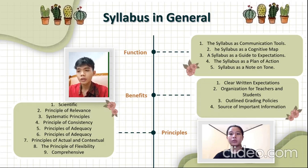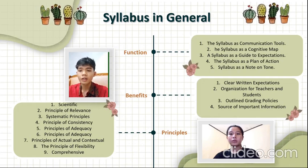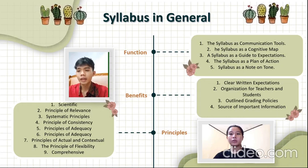Number four, storage of important information. Another advantage of having a course syllabus is that the document can be used to store important contact information. For example, you should include your email address, office phone number, office hours, and other ways that you want your students to contact you. By doing this, you help your students learn what to do when they face a problem or difficulty in your course. You should also include your college or university policies that students need to be aware of, such as policies on plagiarism and academic honesty.